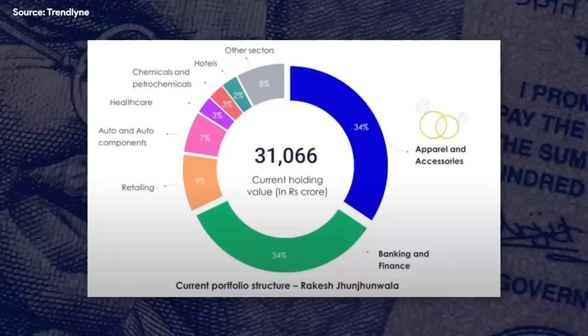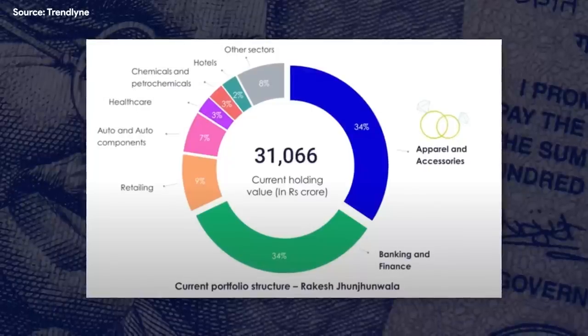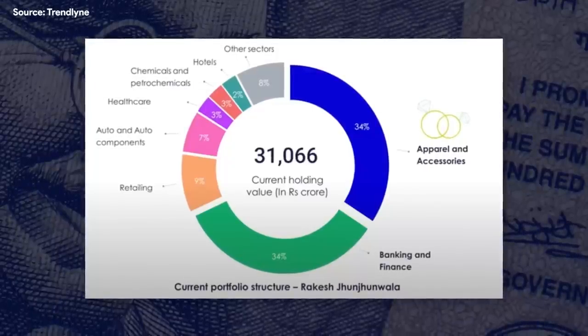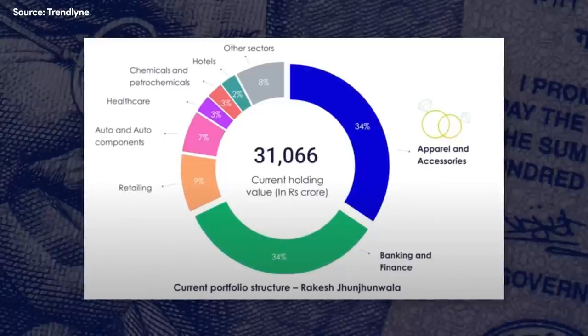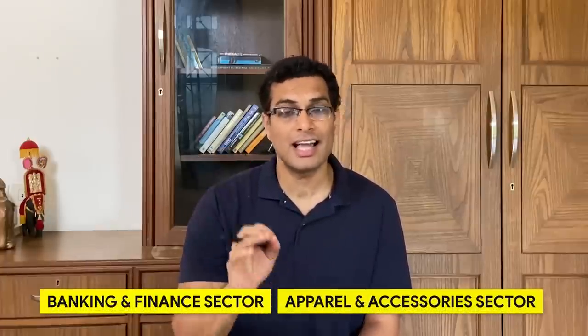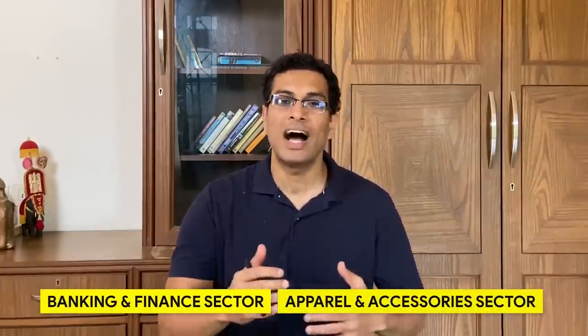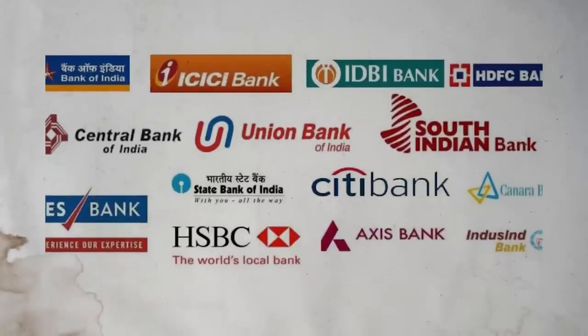First and foremost, you can easily see from this graph that Mr. Rakesh Jhunjhunwala's portfolio is roughly 31,000 crore, a huge portfolio. He has a major position in banking and finance sector and apparel and accessory sector. Now why he has done it, let me break it down for you. First and foremost, I keep talking about this hypothesis that if India has to grow, then the banking and finance industry has to grow with it.